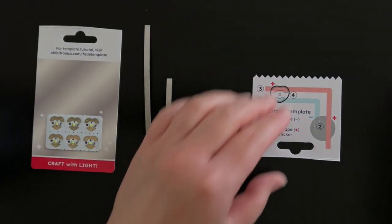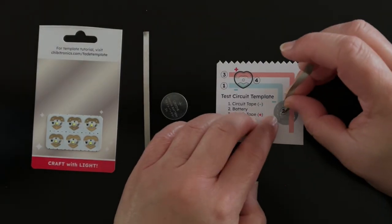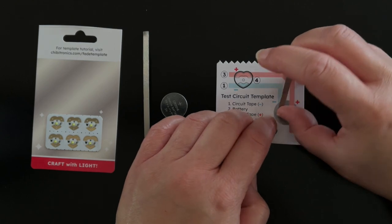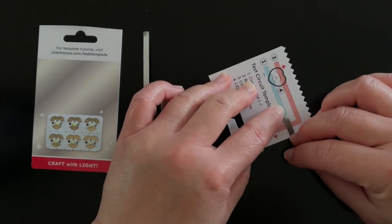Start by adding a little double-sided adhesive of your choice to the battery outline on the template. Next, add circuit tape along the blue negative line. I am using conductive fabric tape here, but you can also use our copper tape.